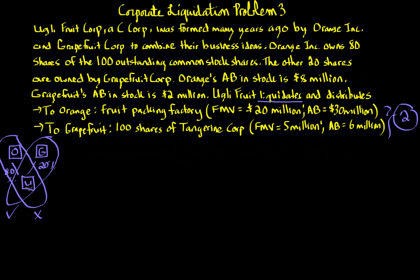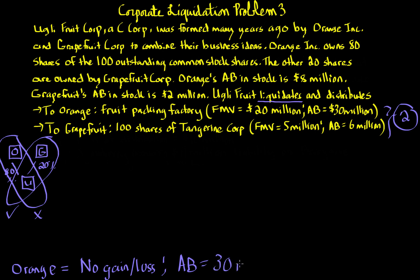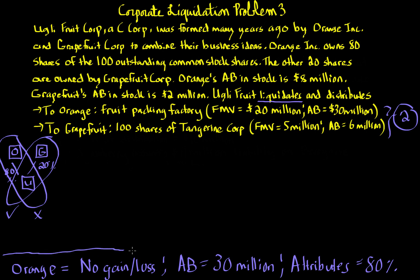Starting with Orange in variation two — just like variation one, no gain or loss is recognized. The adjusted basis in the property received is a rollover basis; Orange receives a factory with a $30 million rollover basis. Orange also gets to tack on the holding period. All tax attributes — any NOLs, any earnings and profits — roll over to Orange at 80% because of the 80% ownership.